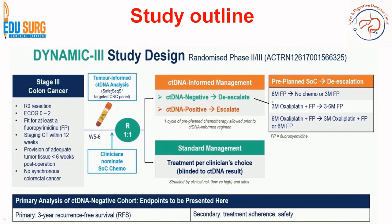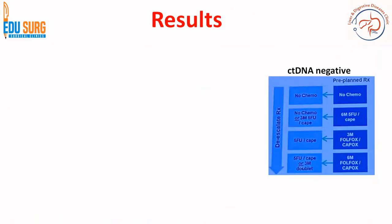De-escalation can mean converting 6 months to 3 months, or no chemotherapy; converting 3 months of oxaliplatin plus 5-FU to 3-6 months of 5-FU only; or converting 6 months of oxaliplatin plus 5-FU to 3 months of oxaliplatin plus fluoropyrimidine, or 6 months of fluoropyrimidine alone. Essentially, de-escalation involves eliminating oxaliplatin or reducing therapy duration. The primary analysis is the ctDNA-negative cohort, assessing 3-year recurrence-free survival, treatment adherence, and safety.